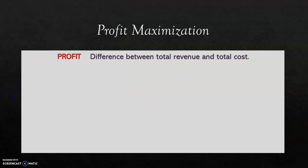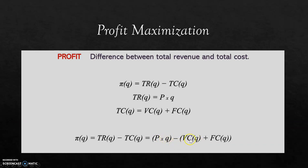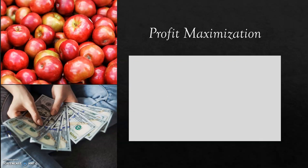We compute profits as the difference between total revenue and total cost. Total revenue is the result of multiplying price by the quantity the firm produces or offers in the market. Total cost is the result of adding variable costs and fixed costs. So profits equal price times quantity, minus variable costs, minus fixed costs.